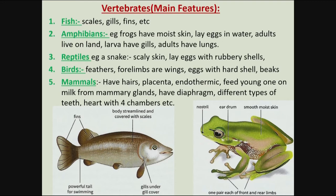The last group of vertebrates are the mammals, which include human beings. They have hairs on their skin, they have a placenta, and they are endothermic — meaning they can keep their body temperature constant despite changes in external temperature. They feed their young ones on milk from the mammary glands, they have a diaphragm, and they are heterodonts, meaning they have different types of teeth: incisors, canines, molars, etc. Their hearts have four chambers.